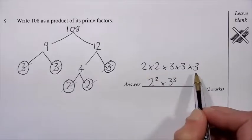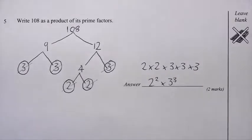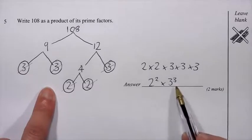I could have left my answer like this if I wanted to. The question's worth two marks, so you'd get one mark for the factor tree and one mark for the answer.